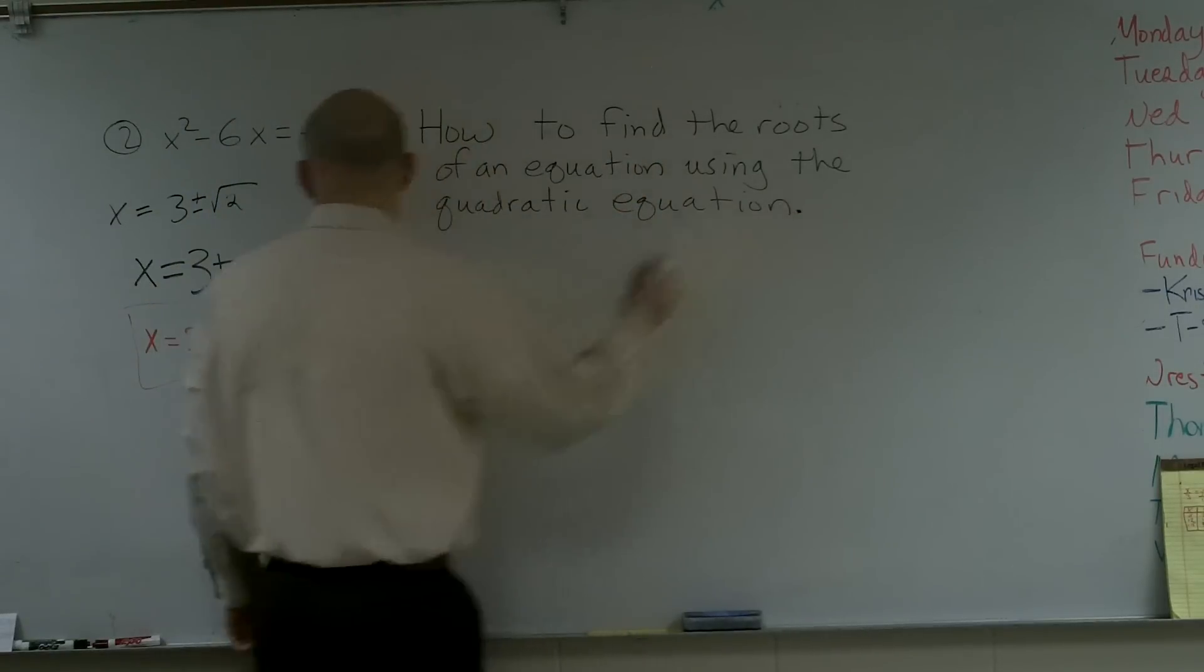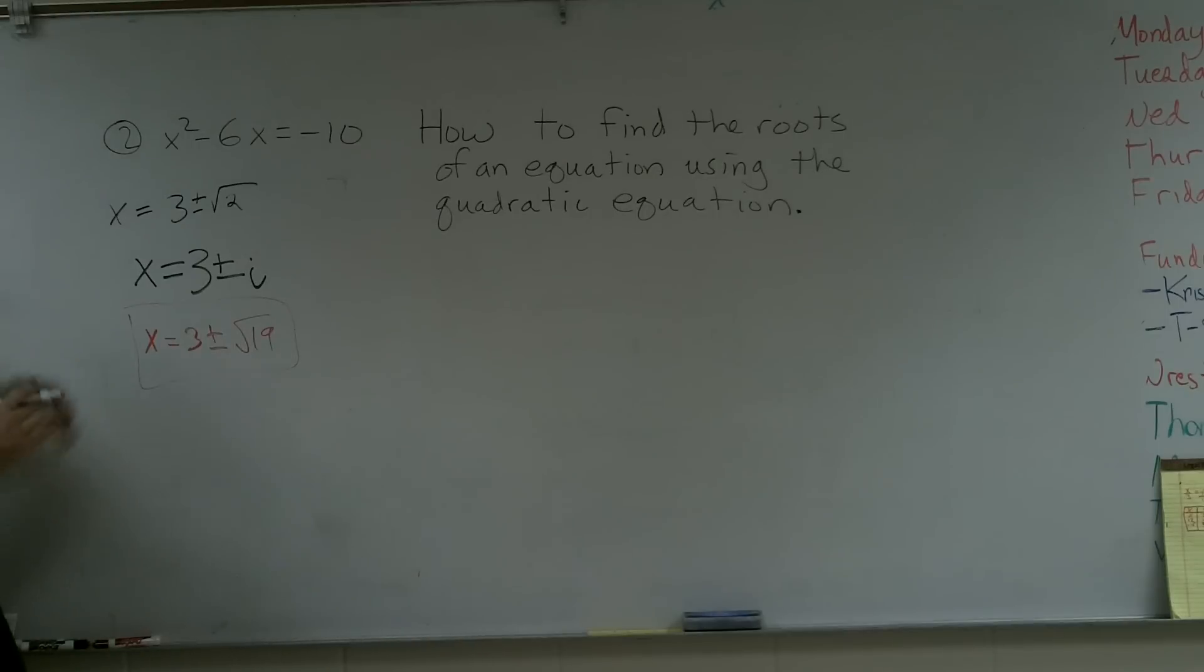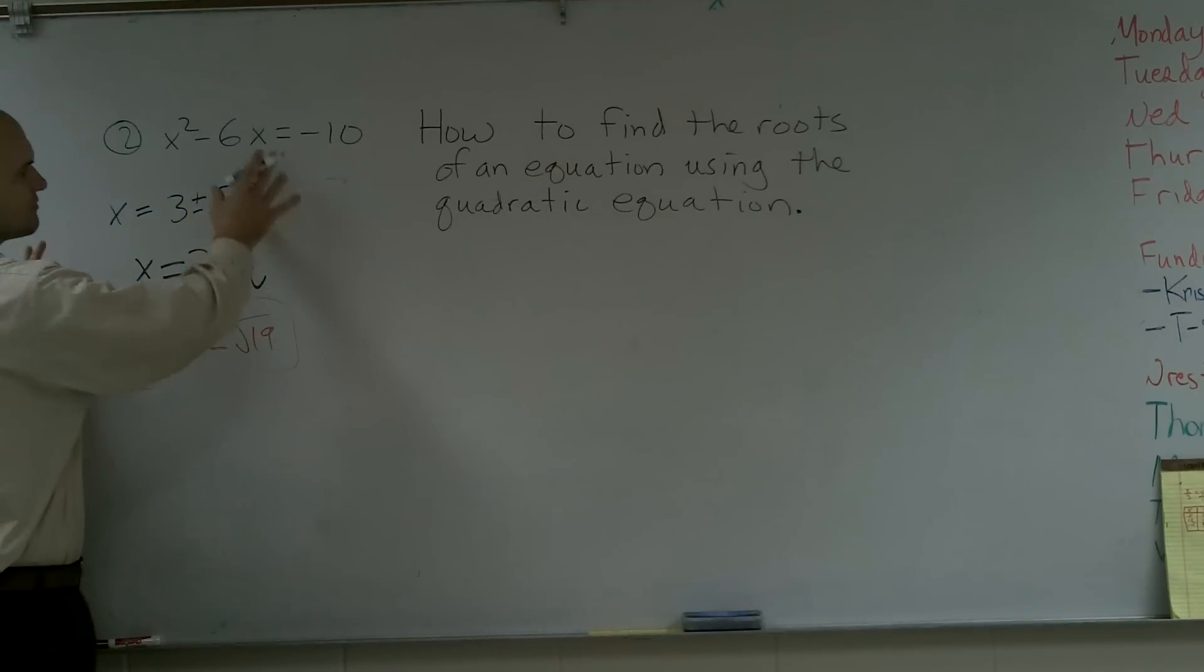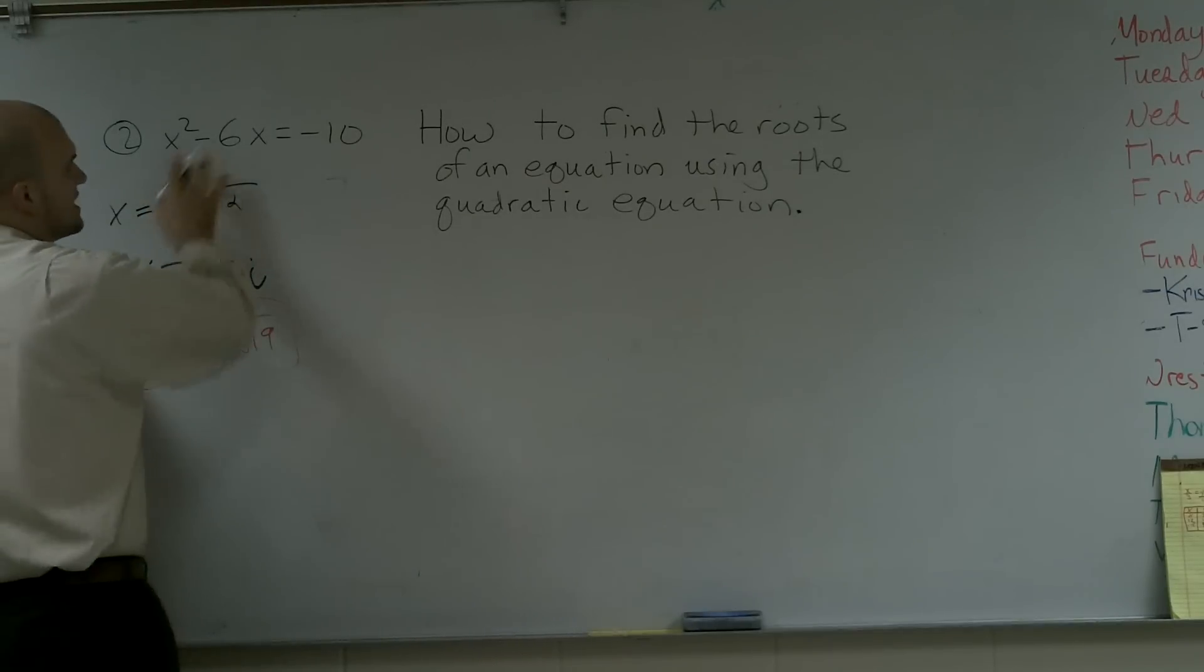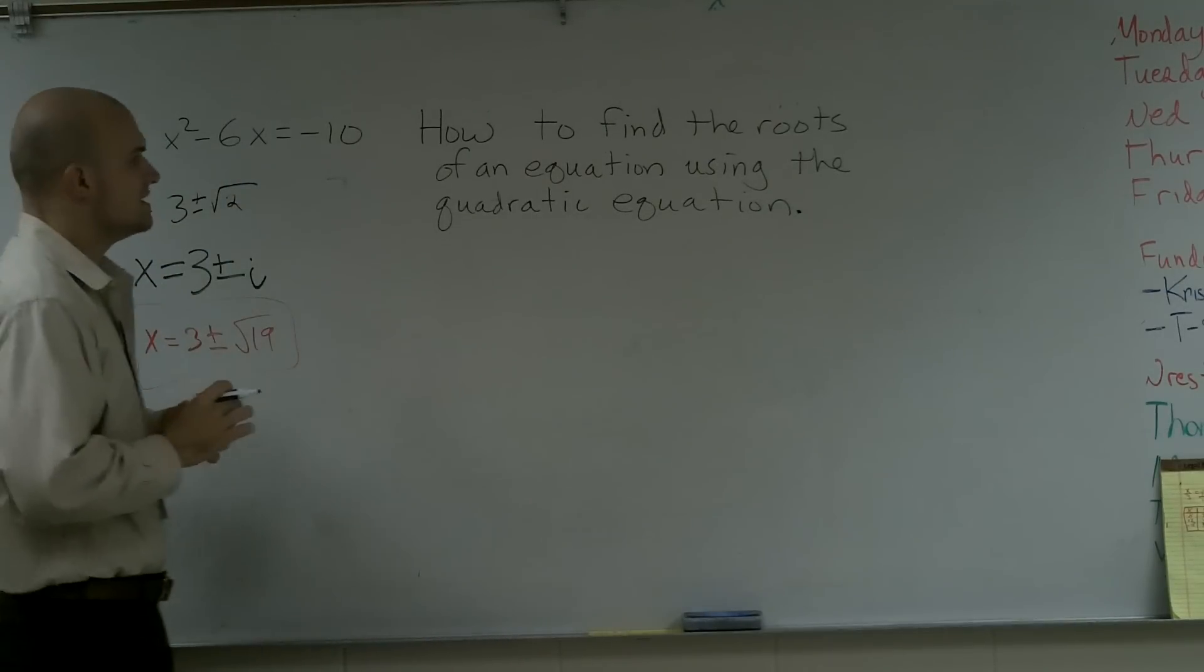So what I did was I gave you guys this problem and we came up with three different answers. What we're going to do is work through the problem and see which group did it correctly or if any of them did it correctly at all. First thing we have our problem which is x squared minus 6x equals negative 10.